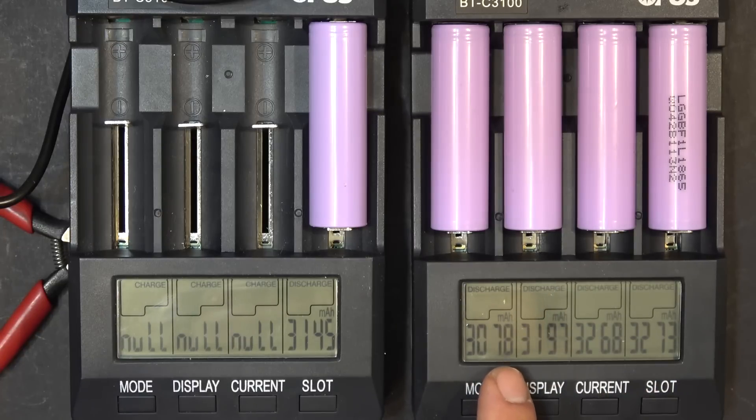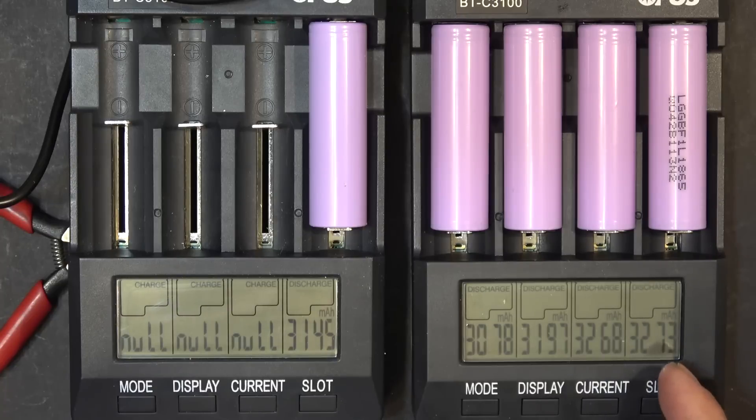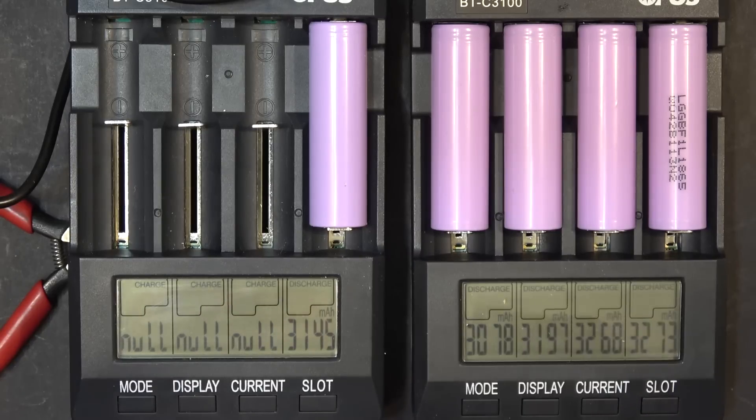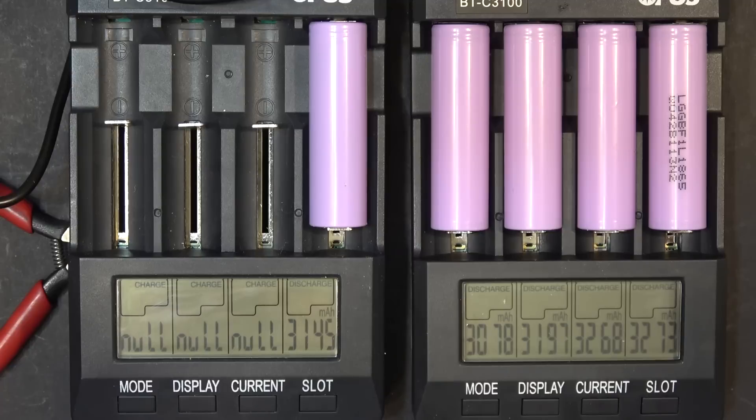And it should be the other way around, right? Because if you discharge faster, you should get less capacity. But it's not what I'm seeing here, it's the other way around. It's like when you drive a car, the faster you run, the less miles per gallon you're going to get, right? The more energy you're going to use, but what you gain is you gain time.